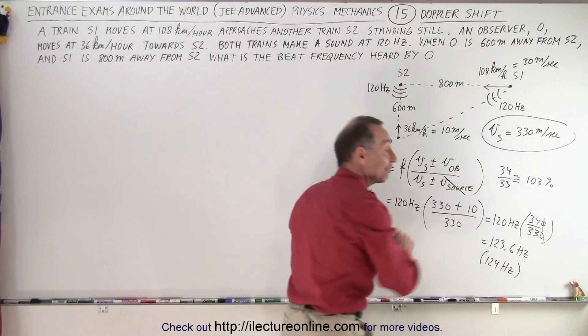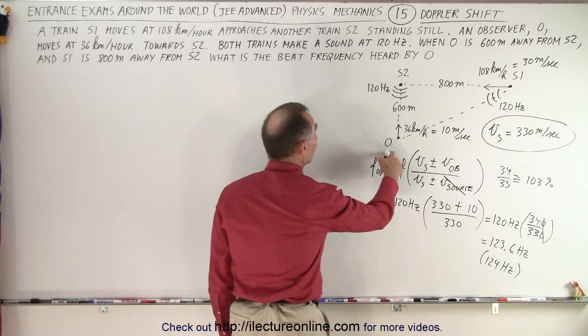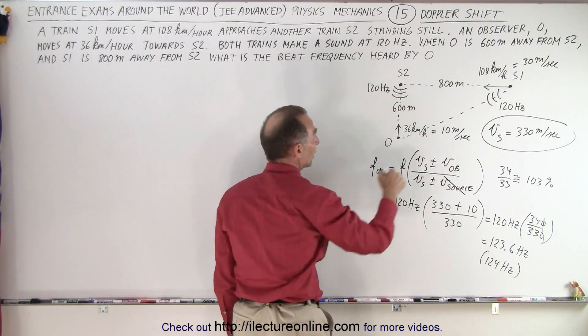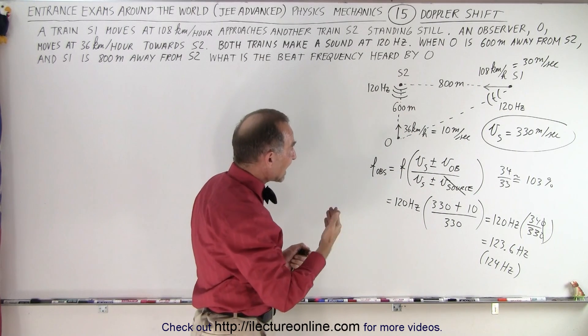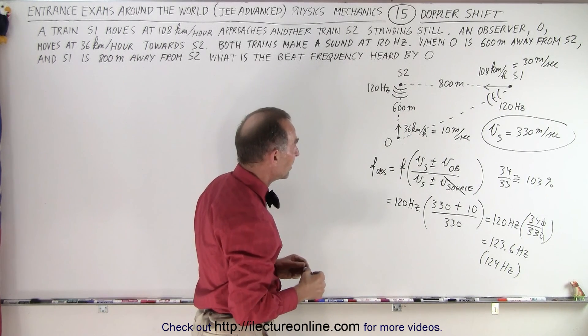So that's the frequency observed by the observer due to this train right here. But what about this train? Well, notice that we have a 6, 8, 10 triangle, so to speak.